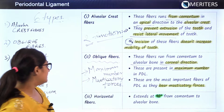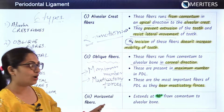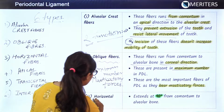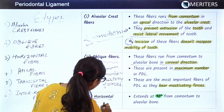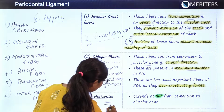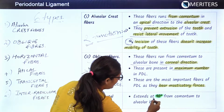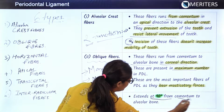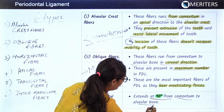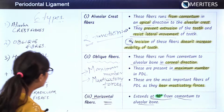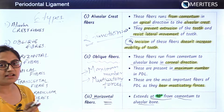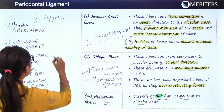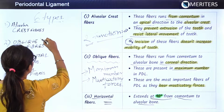The third is the horizontal fibers. As the name suggests, they run horizontally at 90 degrees from the cementum to the alveolar bone. We will now see a schematic diagram for each fiber.